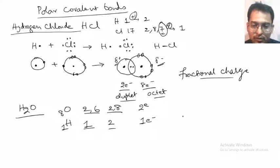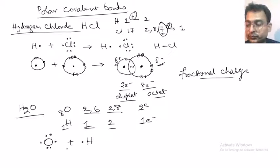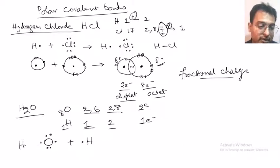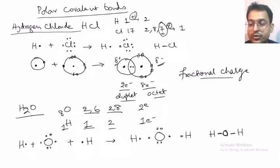In the Lewis structure: 1 molecule of oxygen having 6 electrons, plus 1 hydrogen here, plus another hydrogen. Oxygen is forming 2 single bonds with 2 different hydrogen atoms. Let us look at the orbital diagram to understand better.